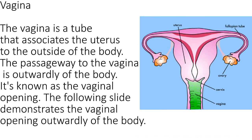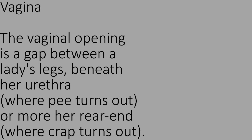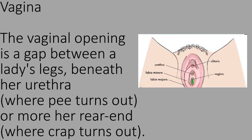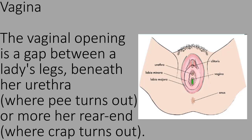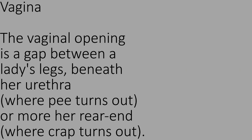Vagina. The vagina is a tube that connects the uterus to the outside of the body. The passageway to the vagina is on the outside of the body, known as the vaginal opening. The vaginal opening is a gap between a lady's legs, beneath her urethra where urine exits, and above her anus where stool exits.